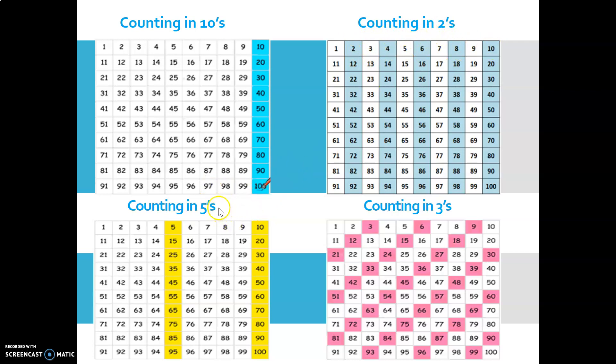Again in your 5 times tables: 5, 10, 15, 20, you can clearly see a pattern there also. Your 3 times tables or counting in 3s shows a lovely diagonal pattern: 3, 6, 9, 12. And this is really beneficial when you're trying to remember the times tables. It's a super way of learning them.